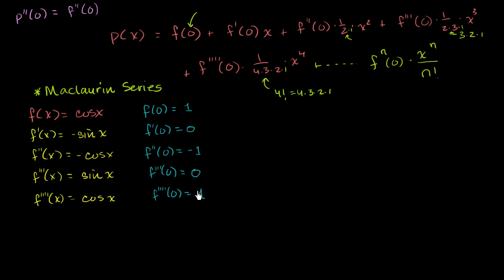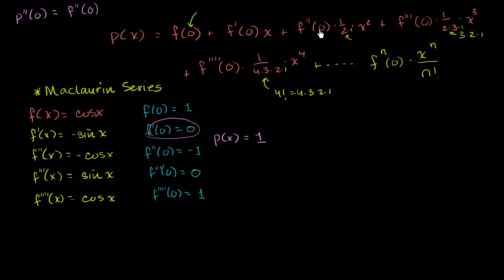So you see an interesting pattern: 1, 0, negative 1, 0, 1, then 0, negative 1, 0 — and so on. If we apply this to find the Maclaurin representation, our polynomial approximation of cosine of x is going to be: f of 0, which is 1. Then plus f prime of 0 times x — but f prime of 0 is 0, so that term vanishes. Then plus the second derivative, which is negative 1, times x squared over 2 factorial — so that gives us minus x squared over 2 factorial.